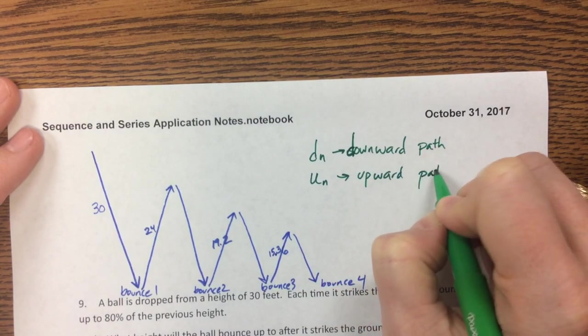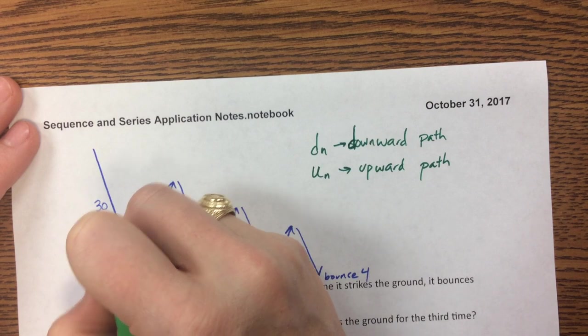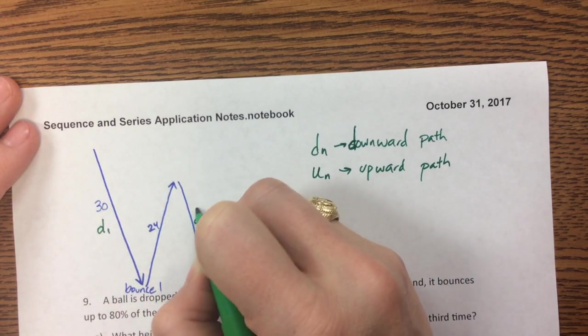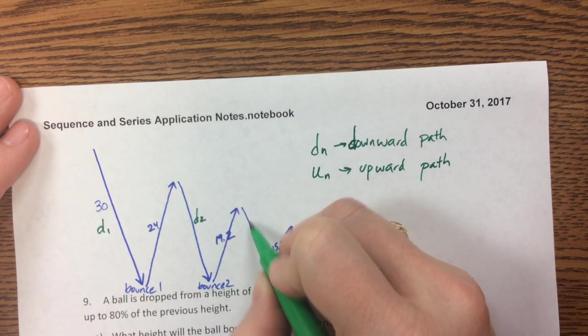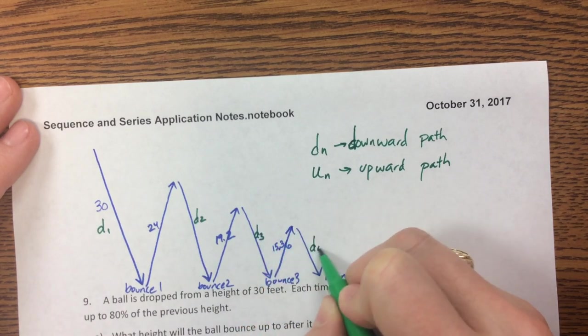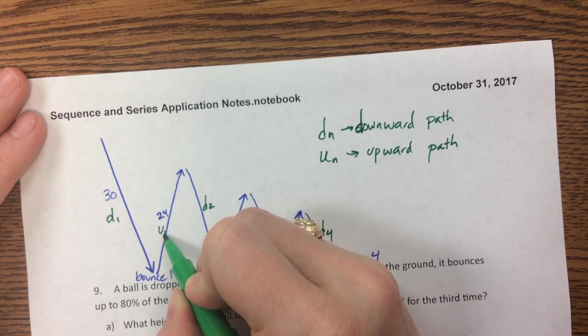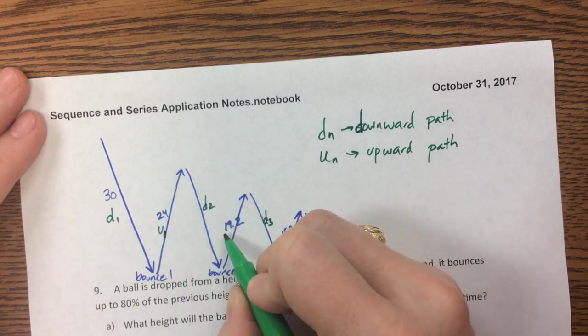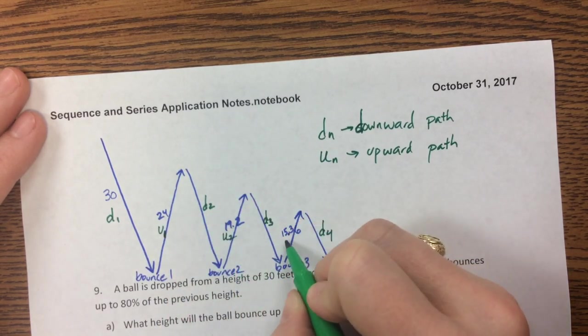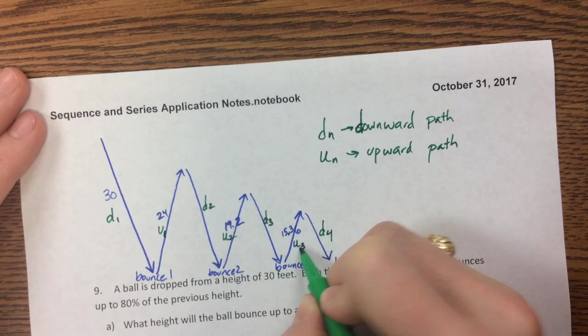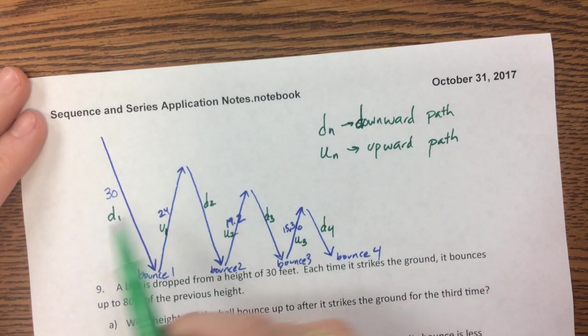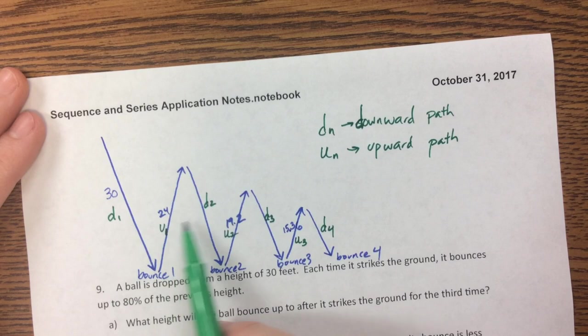Notice this is the first one, this is d_1. Here comes d_2, it's going down the second time. Here is d_3, here is d_4. This one is u_1, it's the first time up. This is u_2, this one right here becomes u_3, etc. So notice u_1 is the same as d_2.